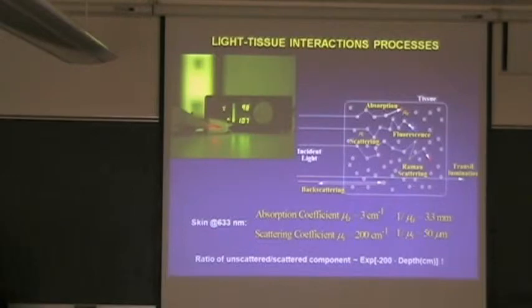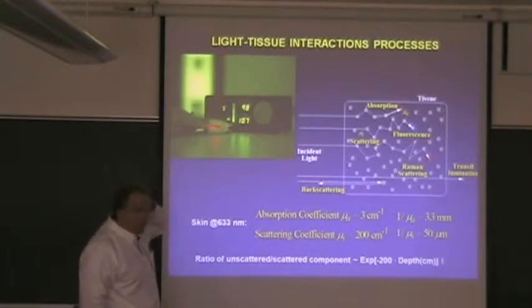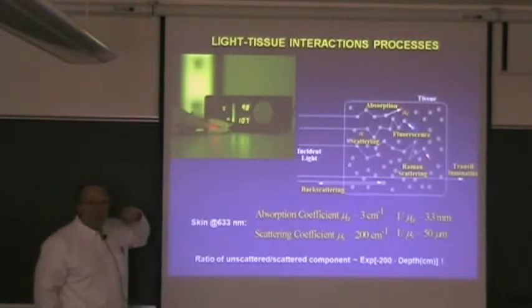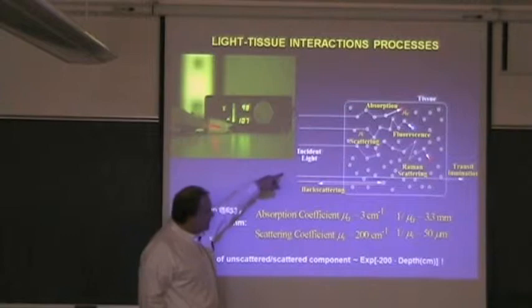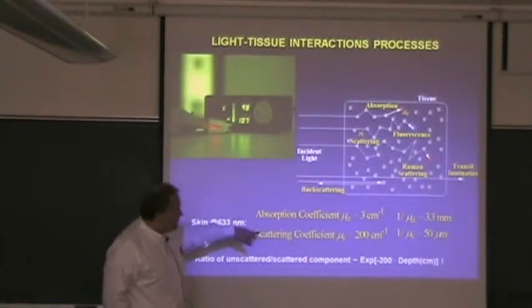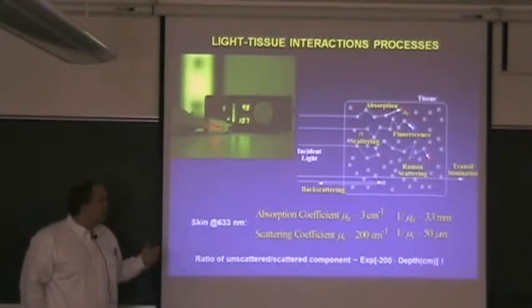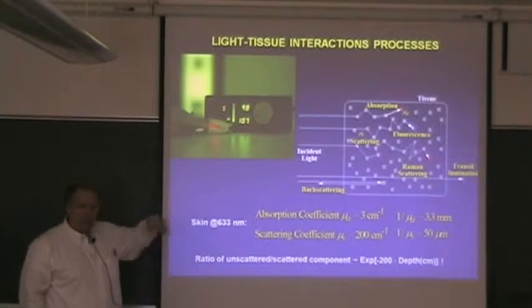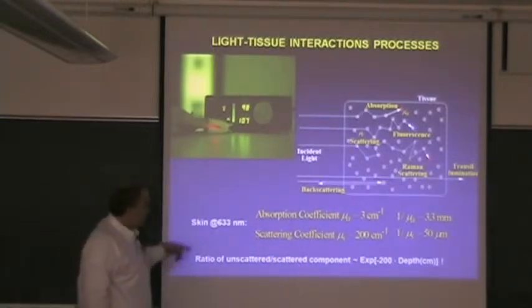What we're basically after with these coherence techniques is trying to see deep into tissues. As you know, tissues are highly scattering, much more highly scattering than absorbing, and the other processes most microscopists look at are even less likely to happen. Scattering is the dominant effect. The scattering length in typical tissues in the red is on the order of 50 microns. The absorption coefficient is actually a lot less — the average distance between absorption effects is typically a few millimeters. Scattering dominates.